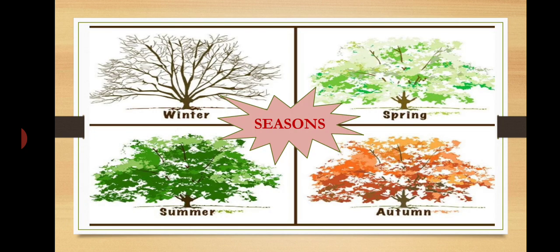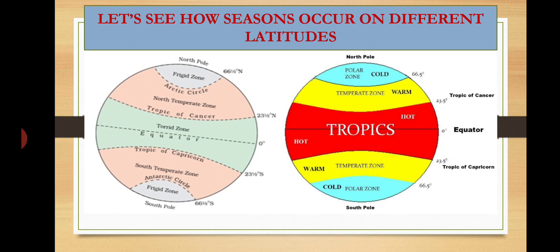Now we are going to learn in which months spring, summer, autumn, and winter seasons prevail. But first, let's see how seasons occur on different latitudes. The equator is the main latitude on planet Earth, dividing it into the northern hemisphere and southern hemisphere. In the northern hemisphere, important latitudes are the Tropic of Cancer at 23.5 degrees and the Arctic Circle at 66.5 degrees.